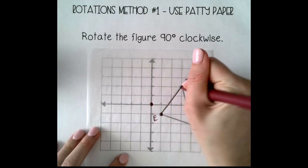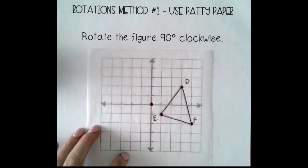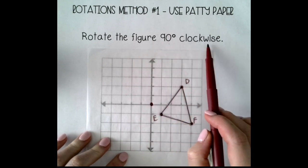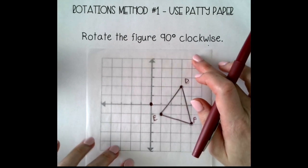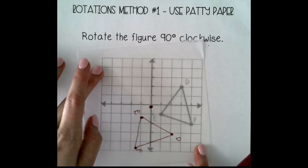Okay, you can connect them if you would like. Then you're going to rotate the patty paper like the problem tells you to, so in this case 90 degrees clockwise. Remember clockwise is like this, like a clock. So I'm going to spin it one quarter turn, but you want to keep the origin in the same spot.